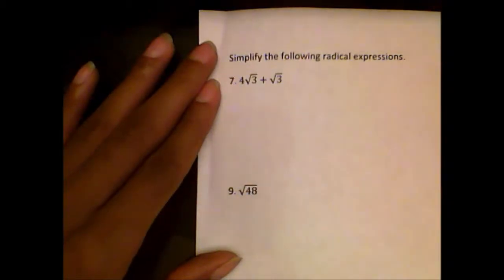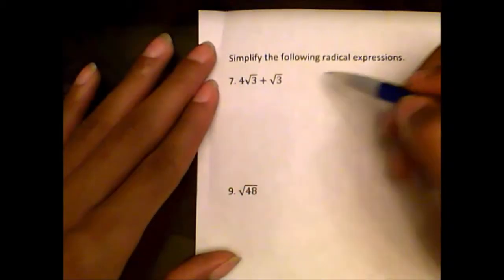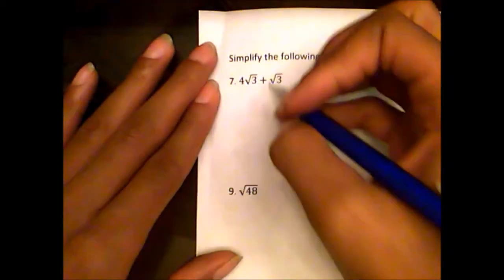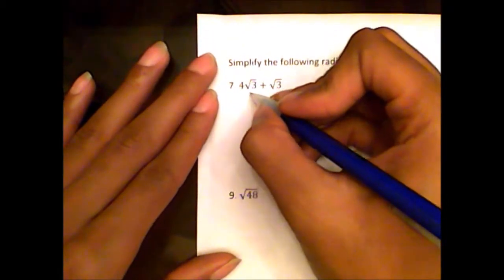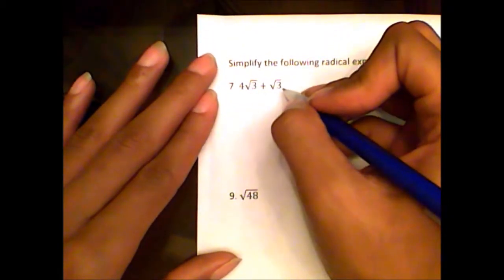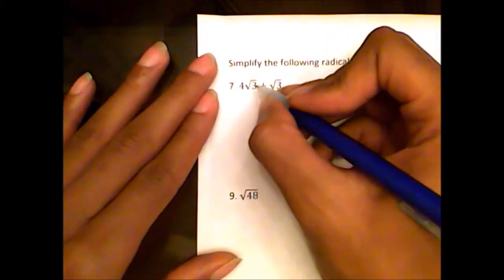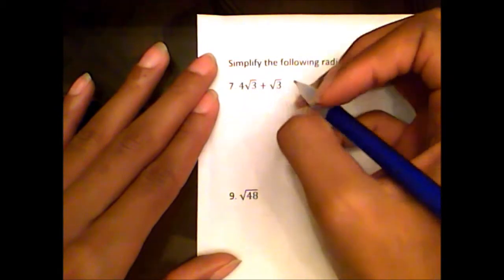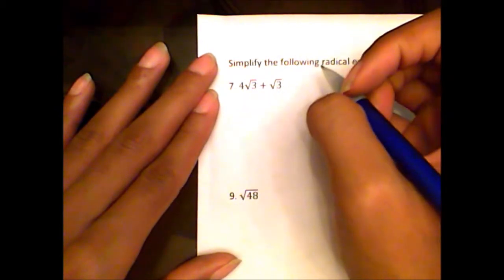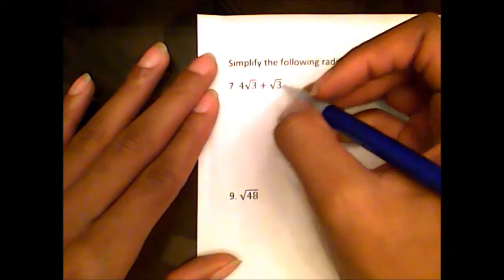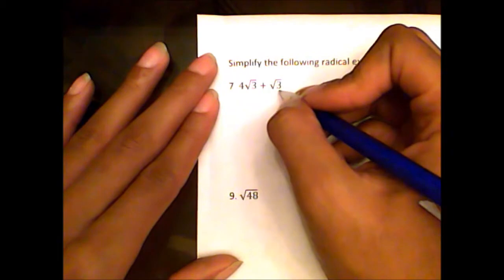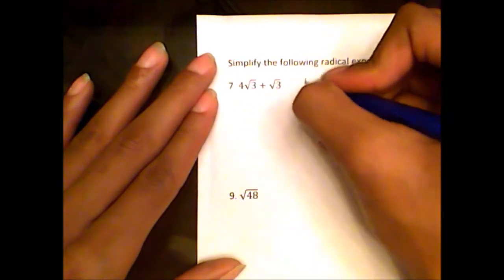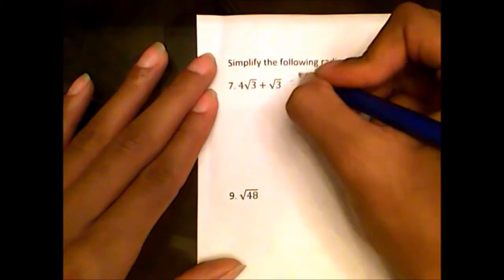For the next few problems, we're going to simplify the following radical expressions. Number seven: four rad three plus rad three. We can add these two rads because they have the same number inside the square root. So four rad three plus one more rad three is just going to give us five rad three.